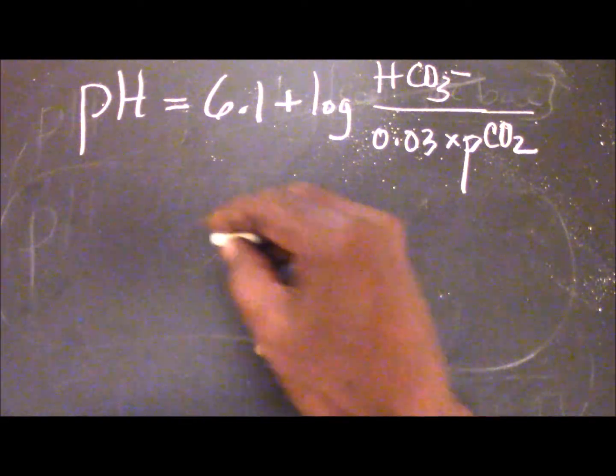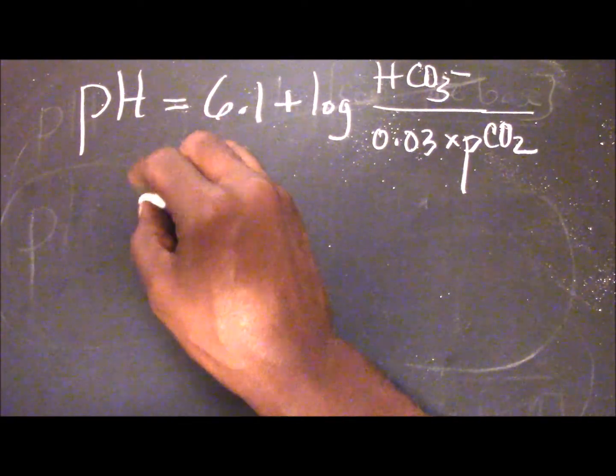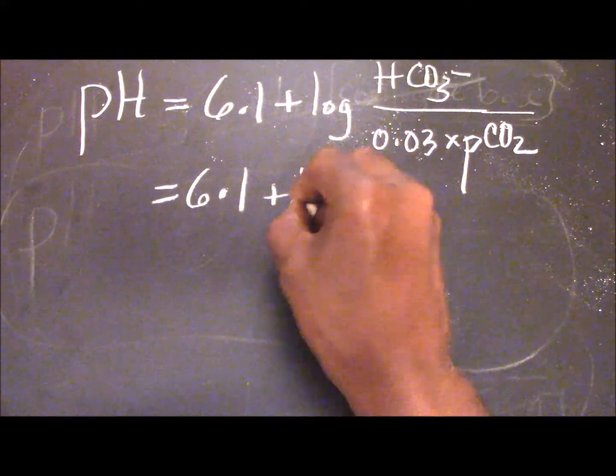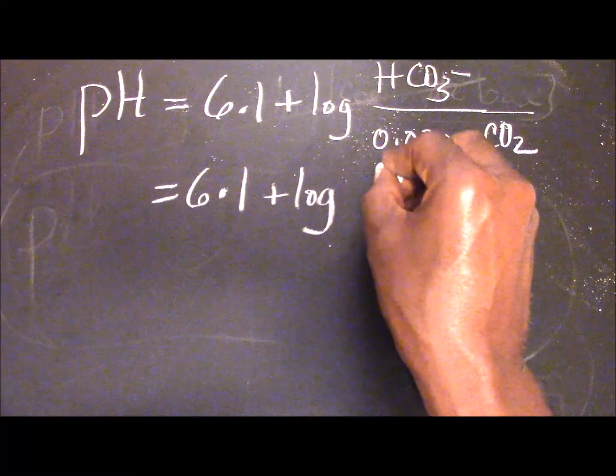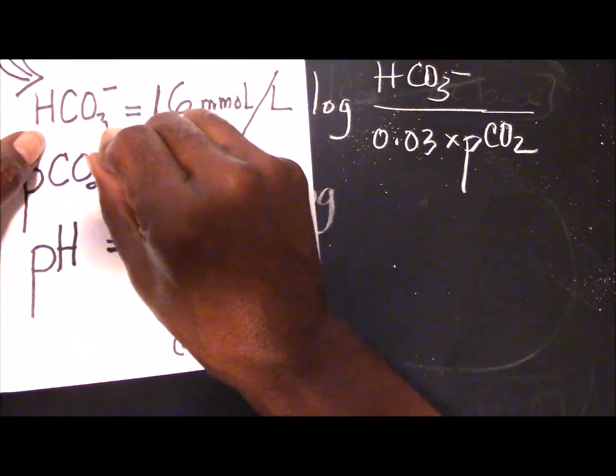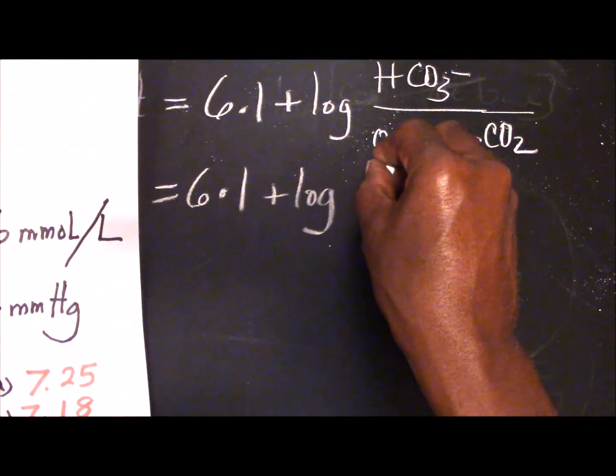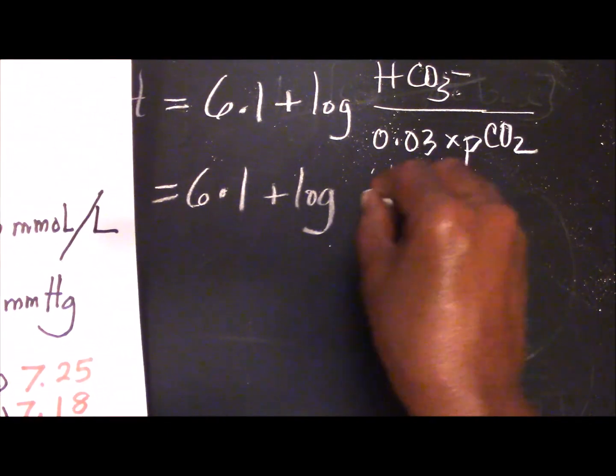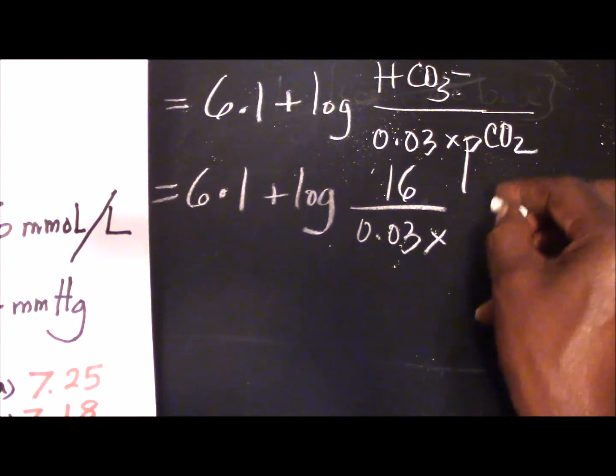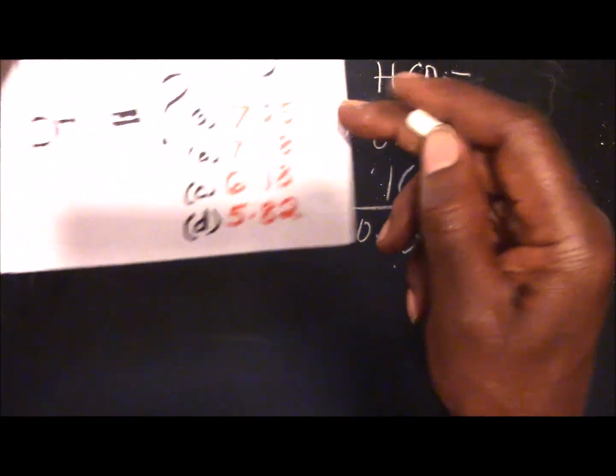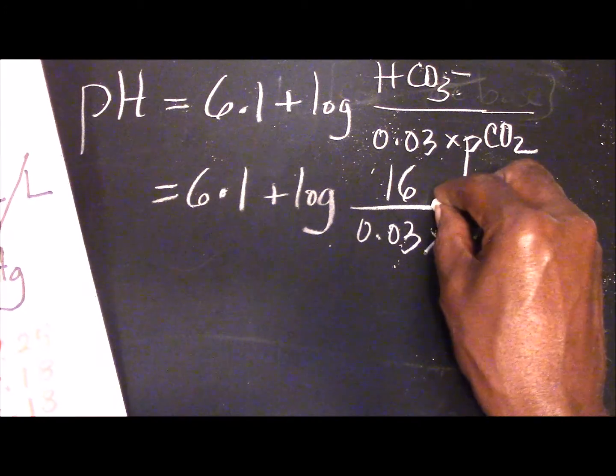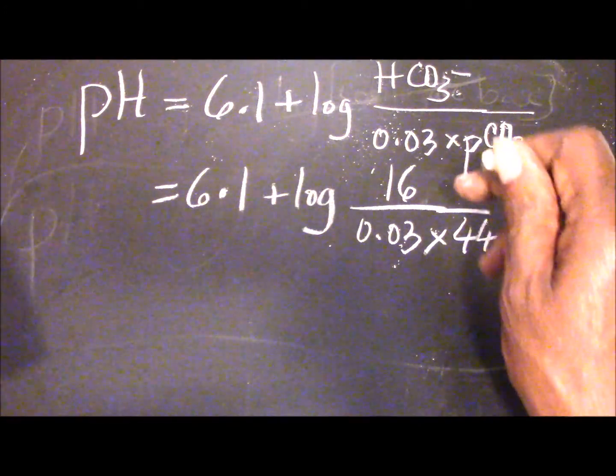It is not complicated. What is important here is that you proceed very carefully. You have your 6.1 here, and then you have your log here. And then you were told that the bicarbonate is 16, so you put 16 here. 0.03 you replicate it here, multiplied by the partial pressure of carbon dioxide which is given, and it is at 44 millimeters of mercury, so you put 44 here.